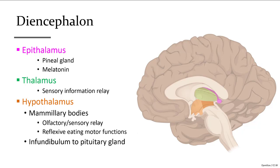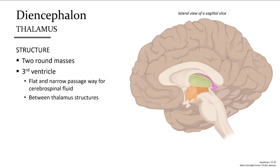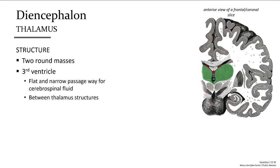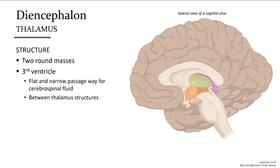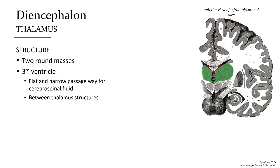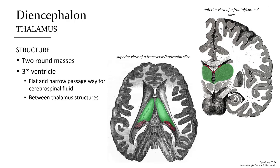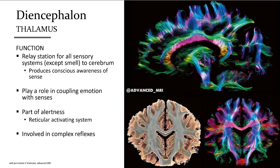The hypothalamus contains the mammillary bodies as well as the infundibulum — the connection to the pituitary gland. The thalamus is a rounded structure that appears fairly flat on a sagittal slice; from the frontal view we see the rounded thalamic structures, while the lateral view shows a flat surface. The majority of the thalamic structure extends into the brain on each lateral side. The thalamus is the brain's primary switchboard or relay station, directing afferent tracks to various locations across the cerebral cortex — particularly for the senses except smell.